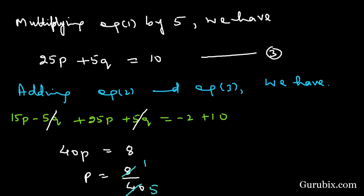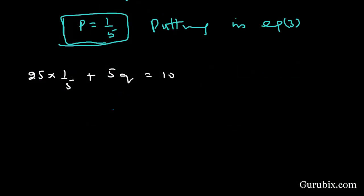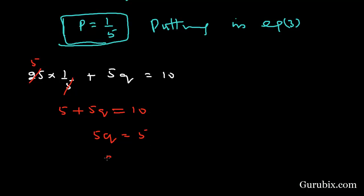Equation number 3 is 25p plus 5q equals 10. Substituting p equals 1 over 5, we have 25 times (1 over 5) plus 5q equals 10. Cancelling 5 with 25 gives 5 plus 5q equals 10, so 5q equals 5, meaning q equals 1.